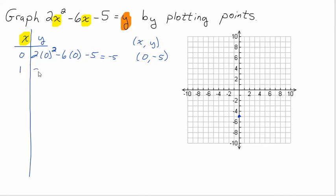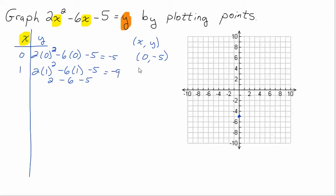Let's try x equals one. So I'm going to do two times one squared minus six times one minus five. Order of operations: one squared is one, times two is two. Take away six, take away five. That's negative four, take away five, is negative nine. So now I have the point positive one, negative nine.